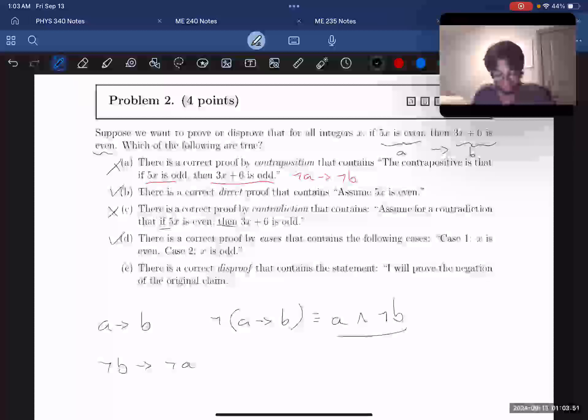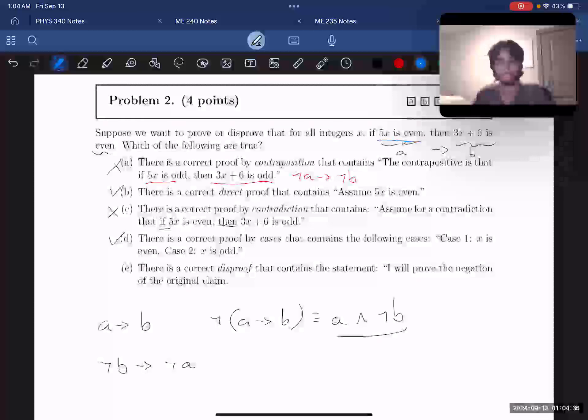Finally, E says that there is a correct disproof that contains the statement, I will prove the negation to the original claim. While this is how we would do a disproof, this statement that we're given is actually correct. How do we know that this is a correct statement? We can do some math with even and odd numbers. For a rough proof of this, if 5x is even, that means that we have an odd number times something is even. This is only true if our other number is even, because an odd number times an even number is even, while an odd number times an odd number is still odd. So we know that x must be an even number. Since x is an even number, we know three times x is also an even number, and an even number plus six will still be even. So we actually know that this statement is true. That means that E is incorrect because there is not a correct disproof of this.